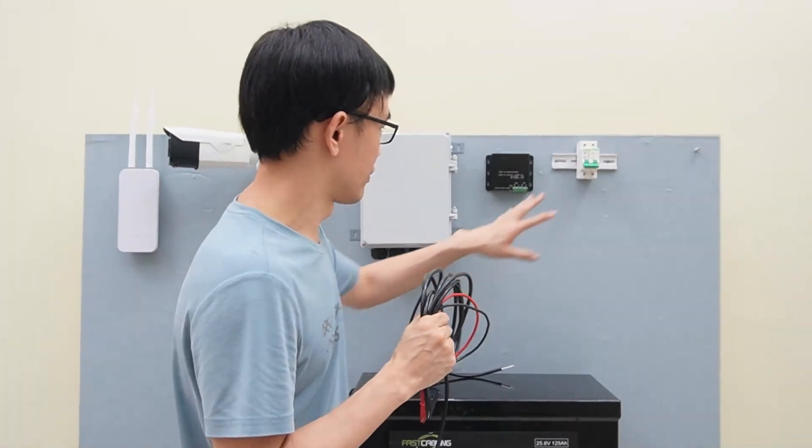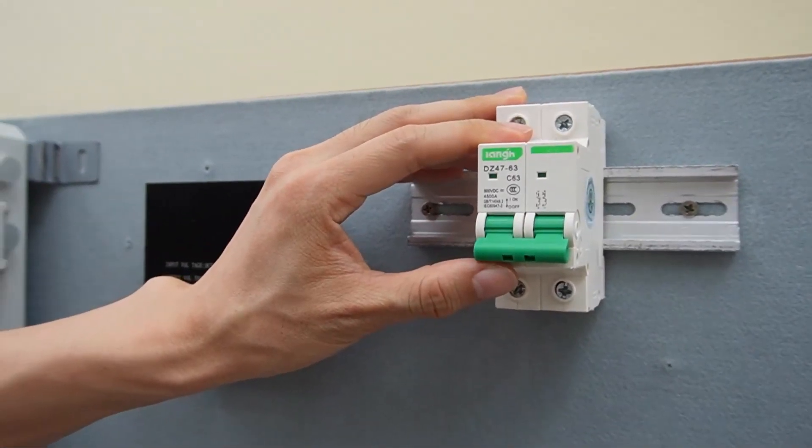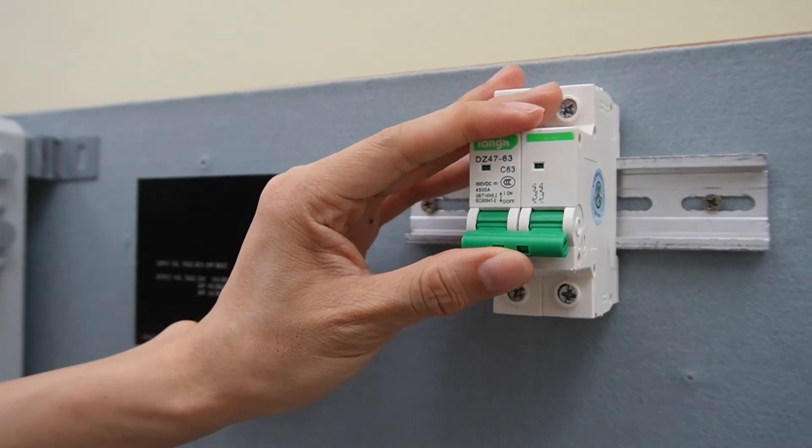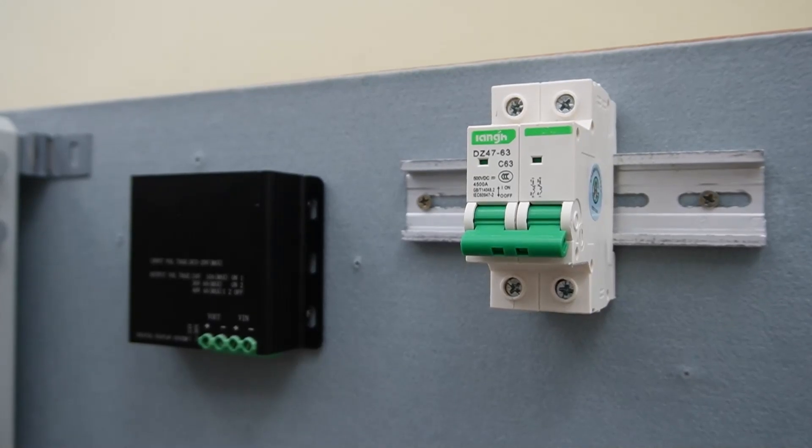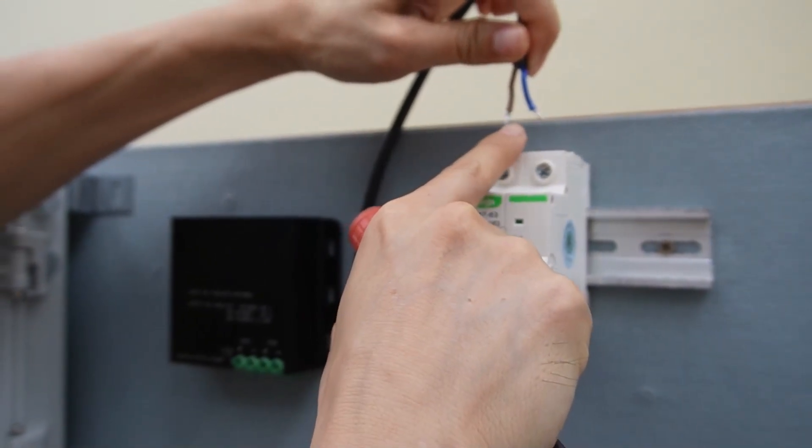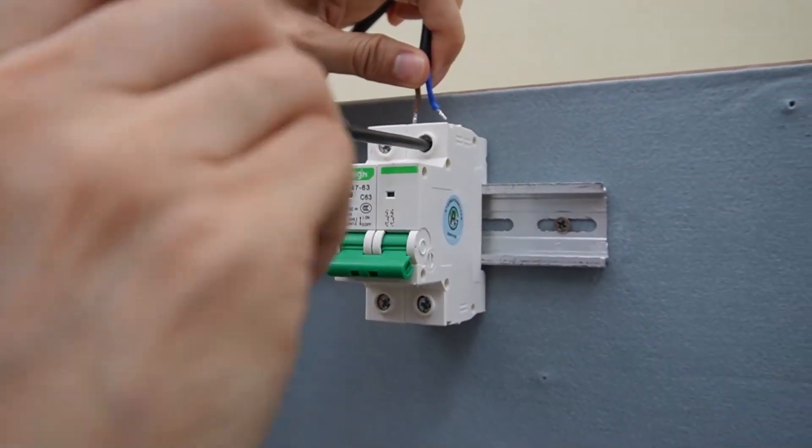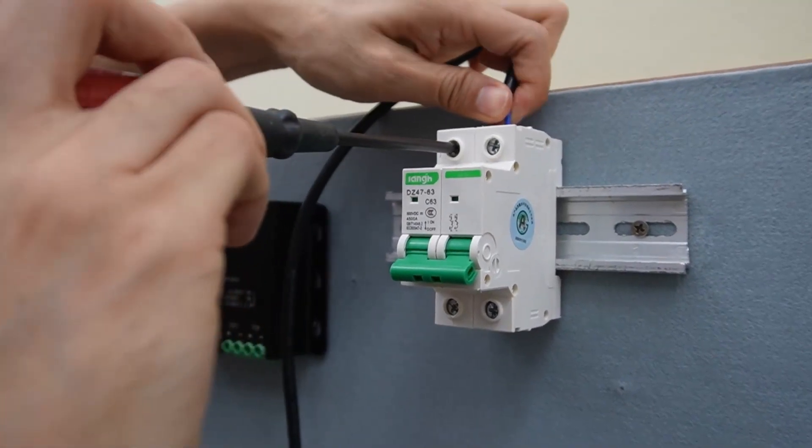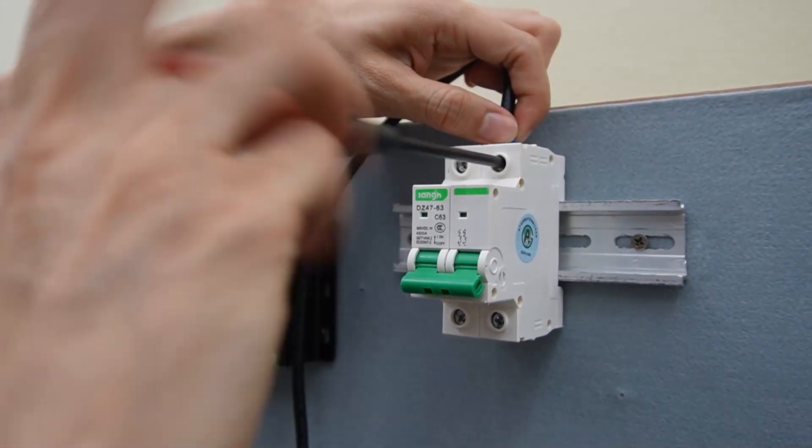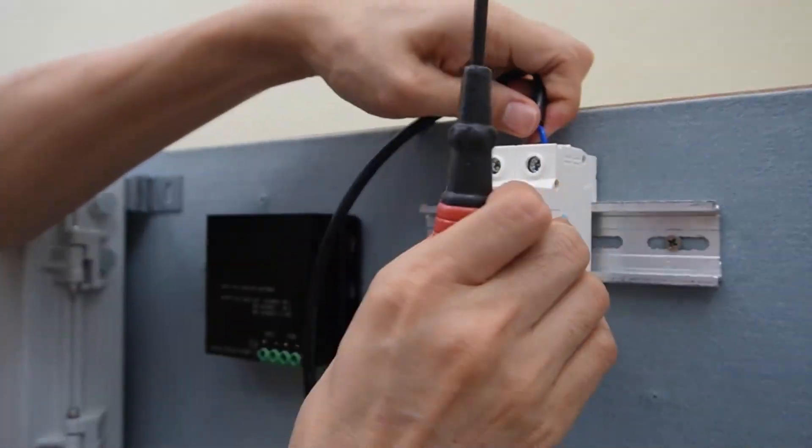Let's connect this battery to this system. Here, I have added a breaker. We can cut off the power when we set up everything or when we don't need power for the device. First, let's connect this cable to this breaker. Here, I take the brown for the positive and the blue for the negative.